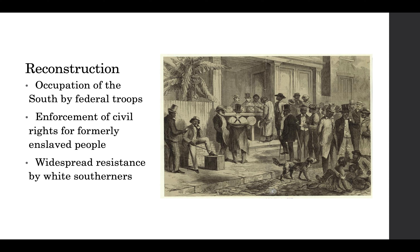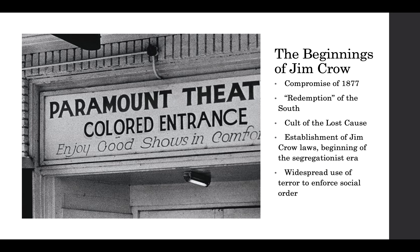So there was a negotiation between the two parties, and in the end the Democrats allowed the Republican Rutherford B. Hayes to become president, on the promise that he would withdraw federal troops from the southern states, which effectively ended this brief experiment in multiracial democracy in the South. Because with the departure of the U.S. Army, southern Democrats once again seized power in state institutions in the former Confederacy. This process is known as the redemption of the South.